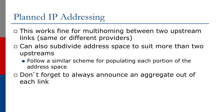The important point is that IP address planning is critically important when it comes to traffic engineering for multi-homing. This example works fine for multi-homing between two upstream providers. We could also subdivide the address space to suit more upstreams — maybe three, maybe four — although traffic balancing gets harder with more upstreams. And don't forget to always announce the aggregate out of each link.